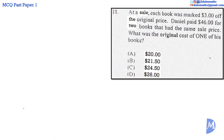Question 21. Daniel paid $46 for two books. He got $3 off each. Therefore, the original price of both books must be...